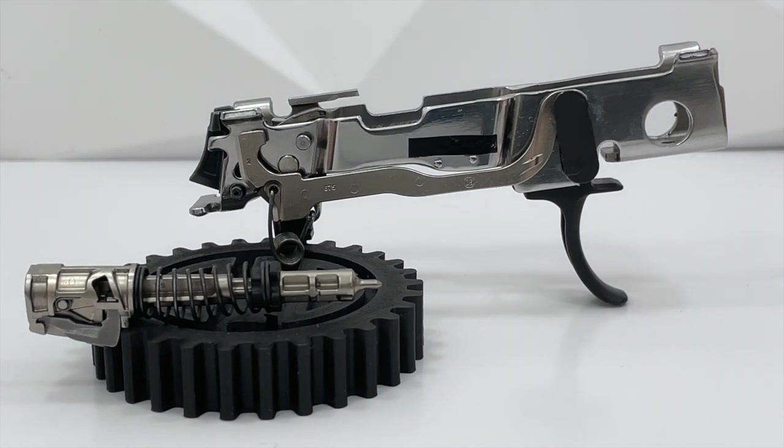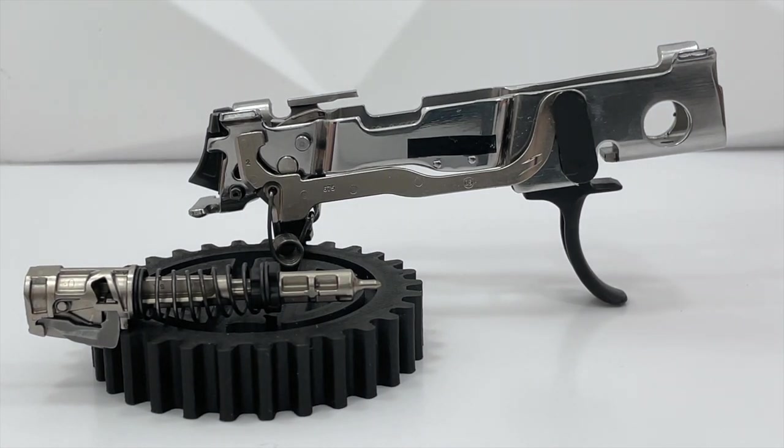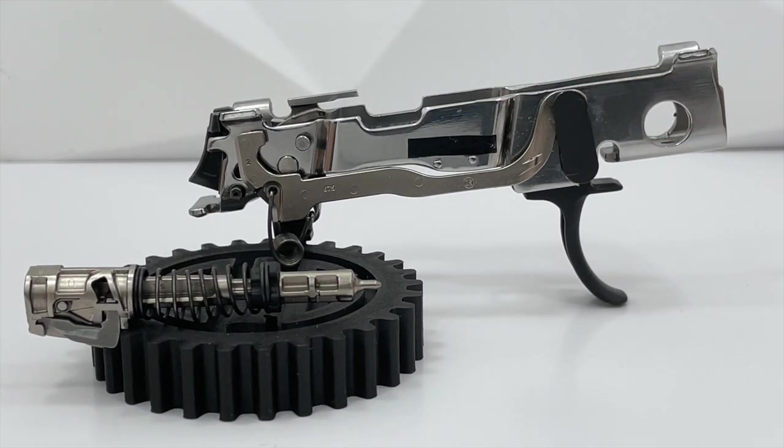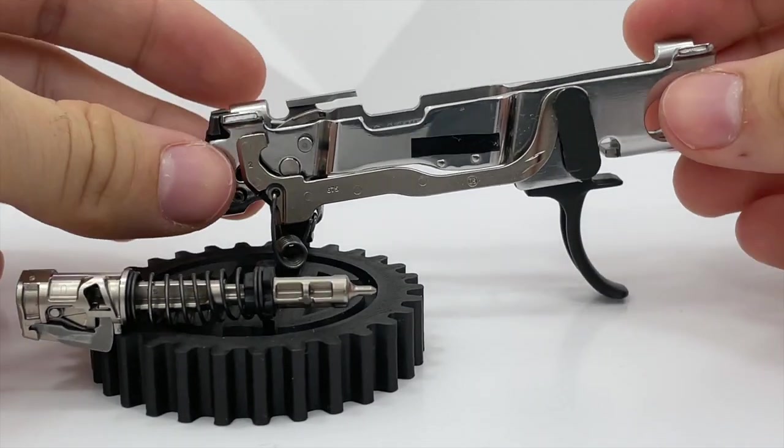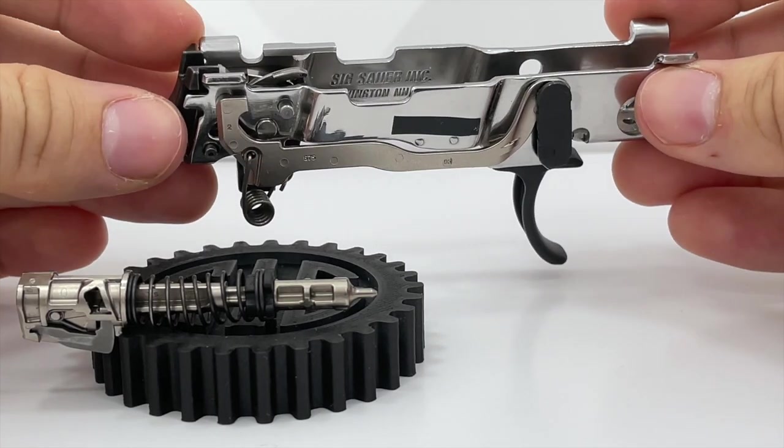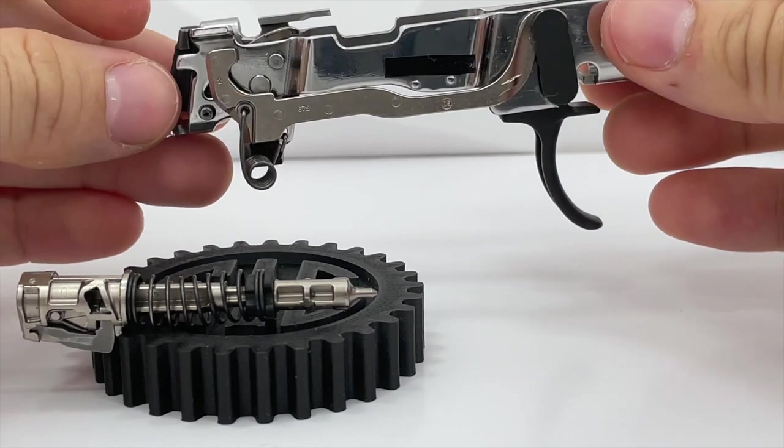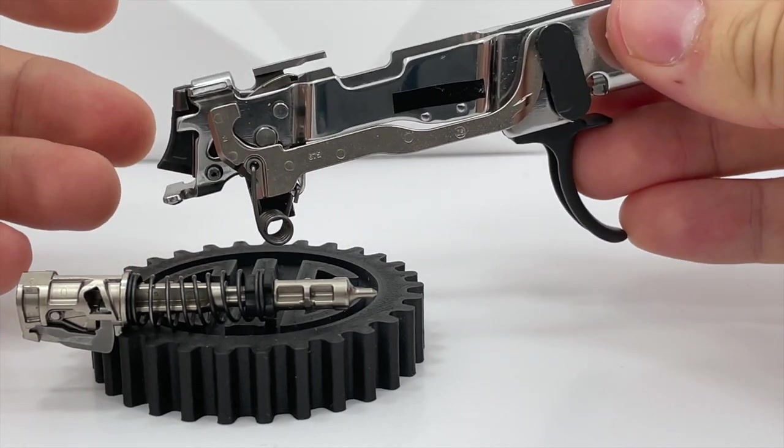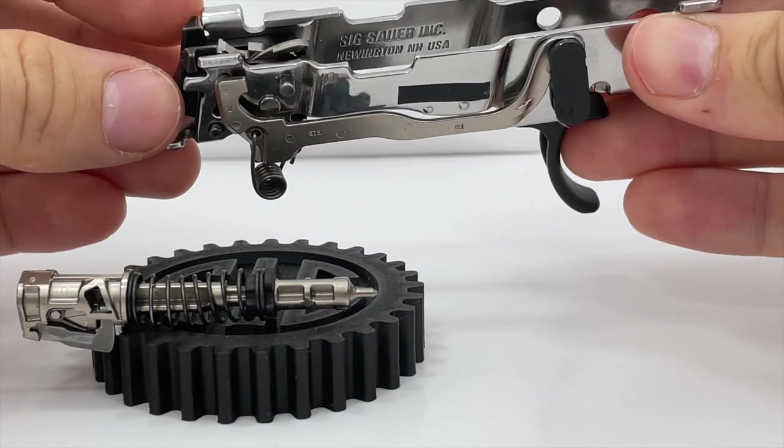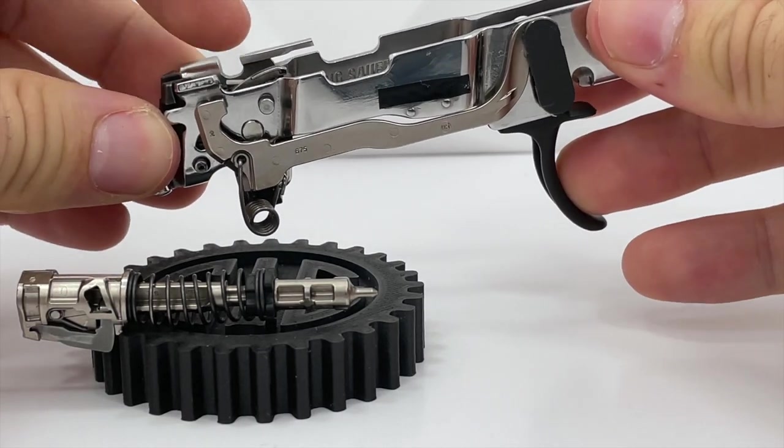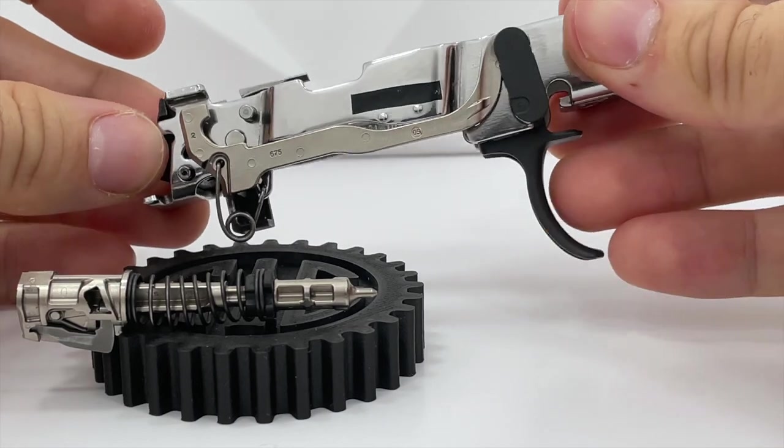We'll begin by quickly familiarizing ourselves with the FCU's safety lever and the striker's safety lever. And by the way, because I assume I'll be using the words safety lever quite a bit over the course of this video, I will preface the word safety lever with either FCU or striker so you know which one I'm talking about. Or maybe I'll reference the FCU safety lever as a lifter just to differentiate between the two.